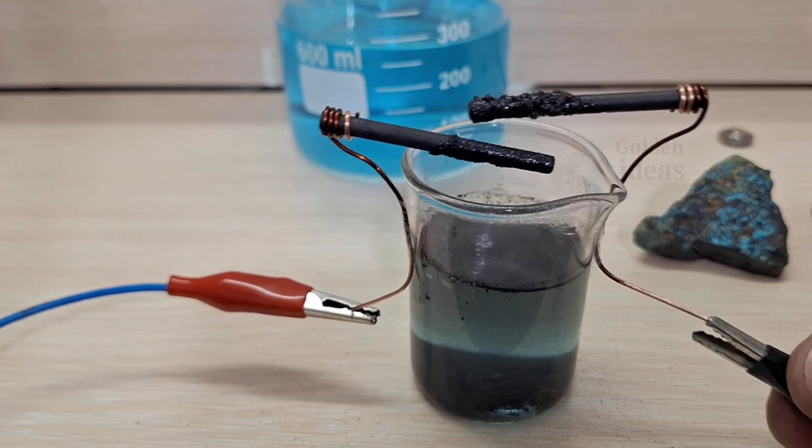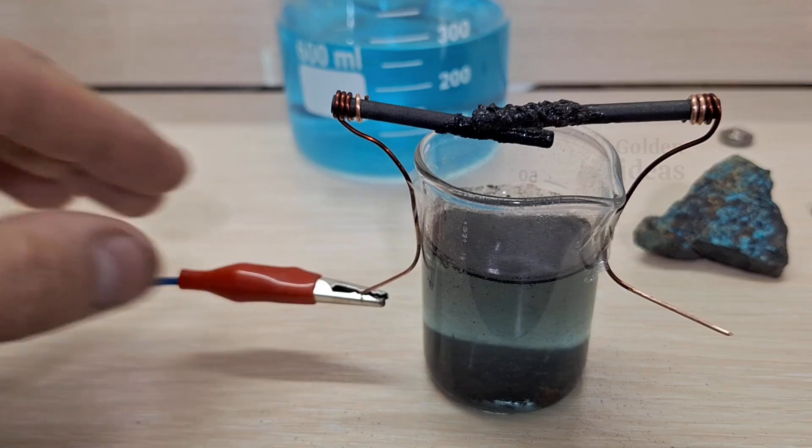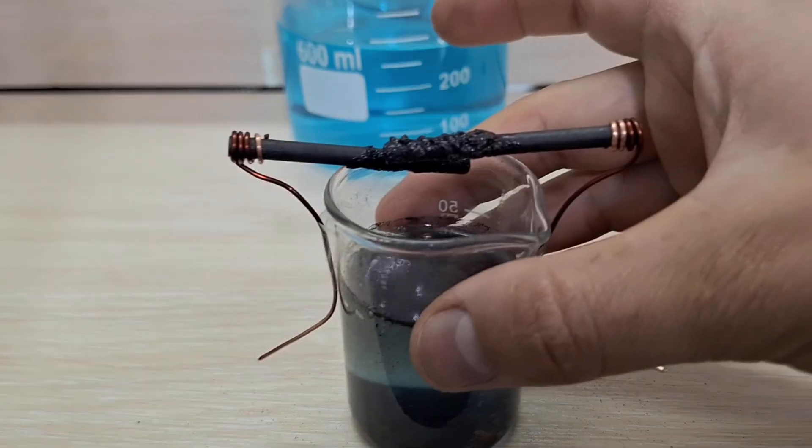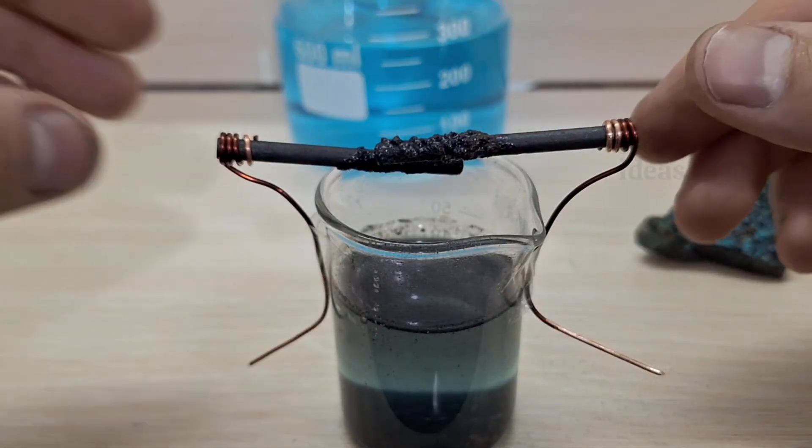Now it's your turn. What do you think is the substance that formed on the anode? And why do you think it deposited there instead of the cathode, where we normally expect metals to settle?